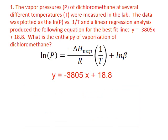In the best fit line we're given as part of the problem, the slope is equal to negative 3,805. From the linear form we know that the slope is also equal to the negative of the enthalpy of vaporization divided by the ideal gas constant R.